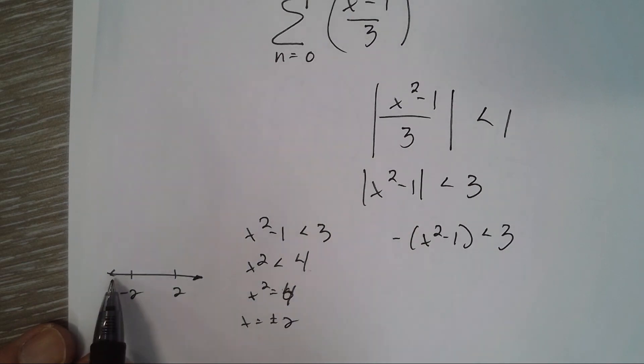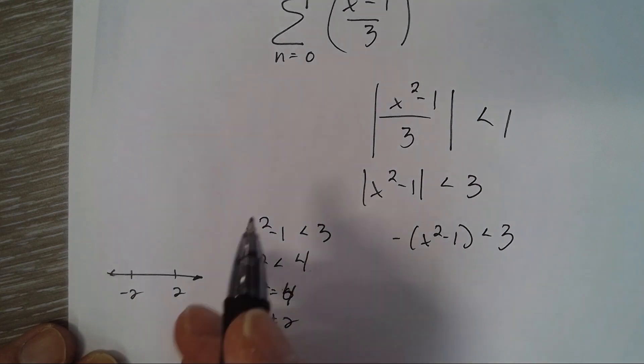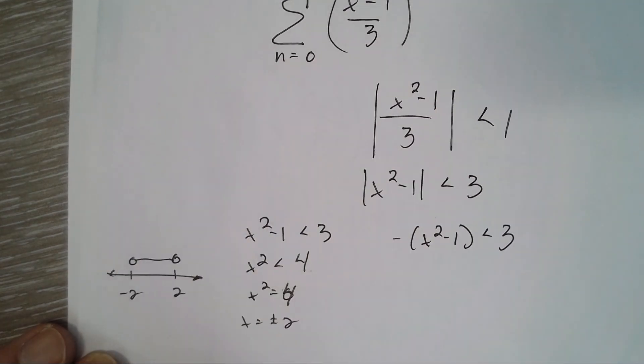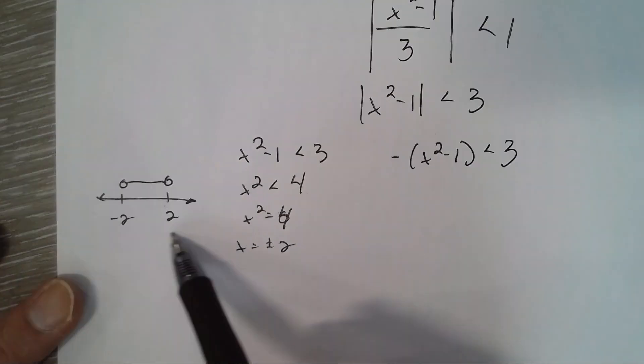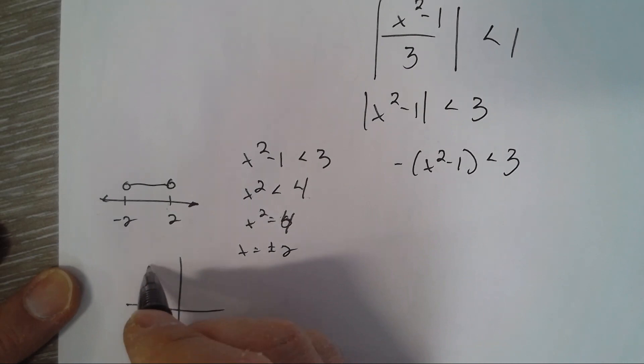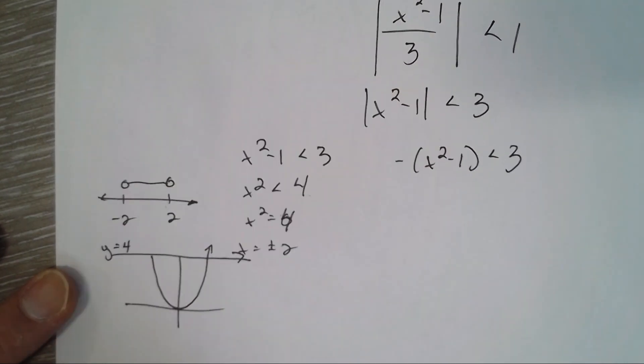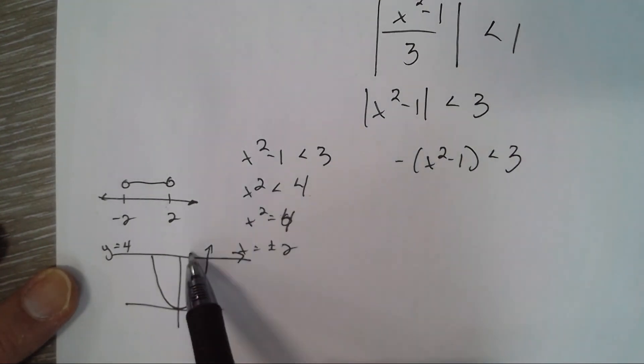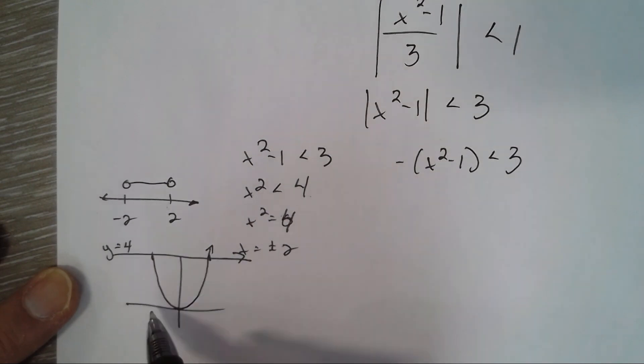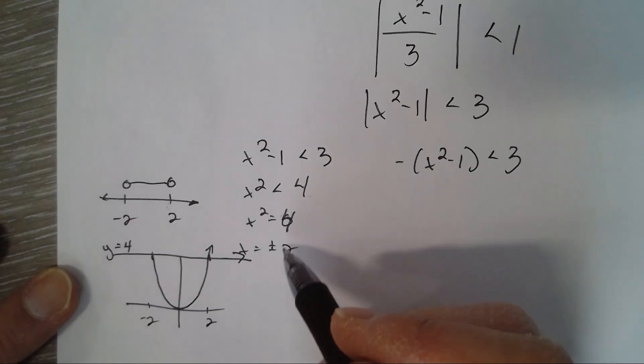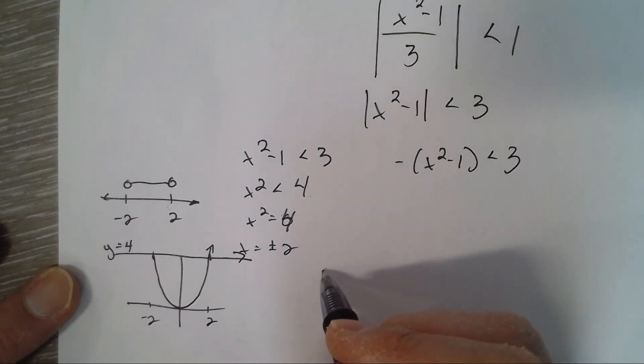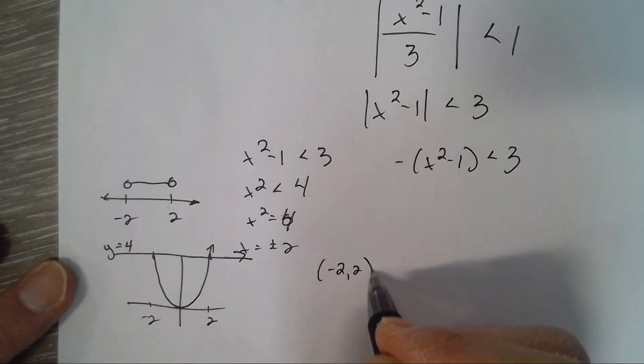So it's between negative two and two. Another way you could think of it is when is x squared less than four? So parabola y equals x squared, here's y equals four. When is x squared less than four? It's from here to here, which is negative two to two. So this inequality produces an interval from negative two to two.